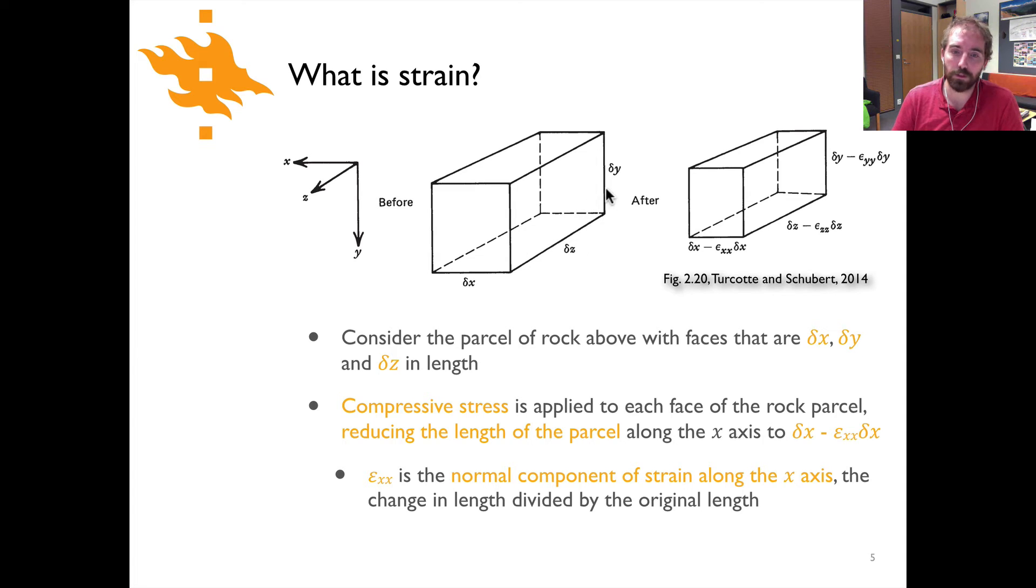So these are simply the physical dimensions of this little cube of rock or rectangular block of rock. And if we apply a compressive stress to each one of these faces of this block and applying it just normal to the faces we see a reduction in the length of each side of the parcel. So for instance along the x-axis here we see a reduction from an original length of dx to dx minus epsilon xx times dx. And so the epsilon xx is the normal component of strain along the x-axis. This is simply the change in length of that side of the material divided by its original length.